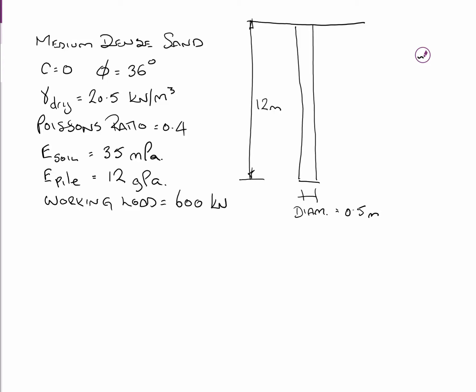Here's an example of a driven pile, a single pile, in a cohesionless sand. On the right, the pile is 12 meters deep and has a diameter of 0.5 meters. It's in a medium dense sand: C equals 0, phi equals 36 degrees, gamma equals 20.5 kN per cubic meter, Poisson's ratio mu equals 0.4, elastic modulus of the soil is 35 MPa, elastic modulus of the pile is 12 GPa. The pile has a working load of 600 kN.